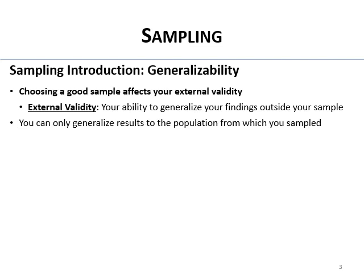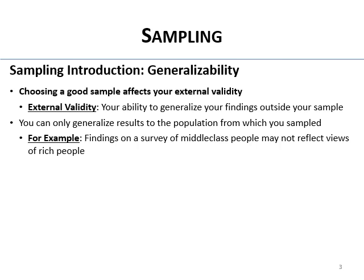External validity covers your ability to generalize to other people, places, times, settings, and variations of procedure. You can only generalize results from the population from which you sampled. Findings on a survey of middle class people may not reflect the views of rich people — common sense, but you see it all the time.